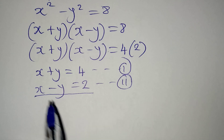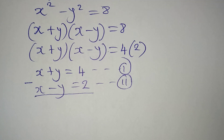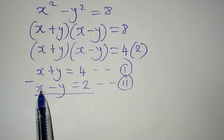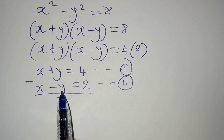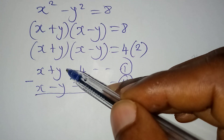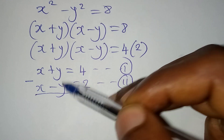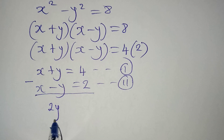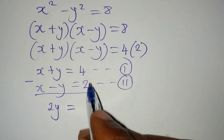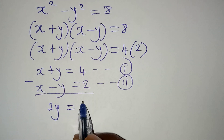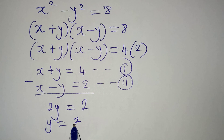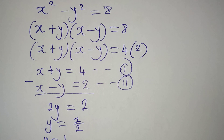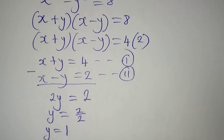We are going to subtract so that x minus x is gone. Then y minus minus y is the same as y plus y, which is two y, and that equals four minus two, which is two. So y equals two over two, meaning y equals one.